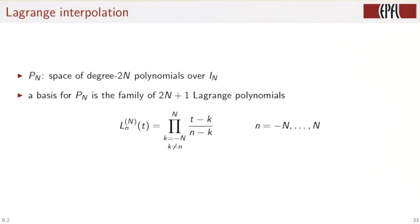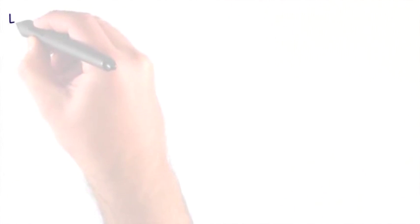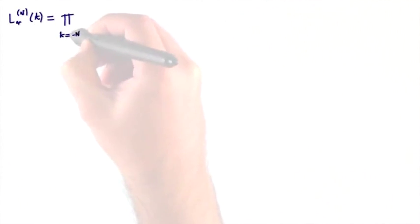Let us just do a small example. Namely, n equals 1. So let's write the formula again. ln of t is this product with k going from minus n to capital N.